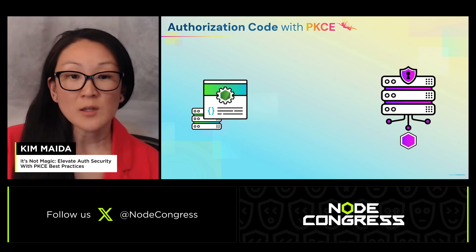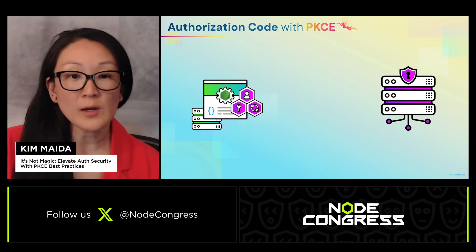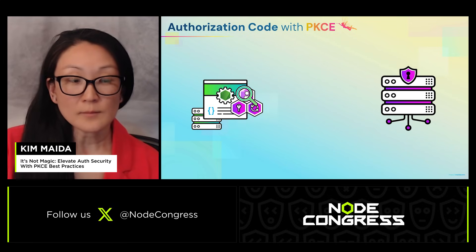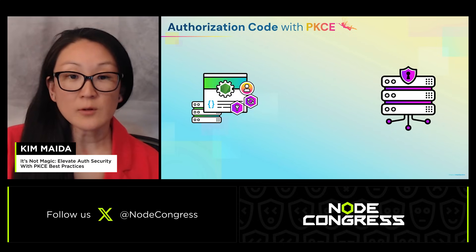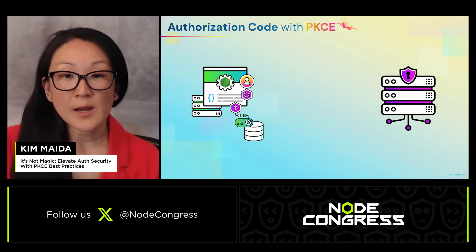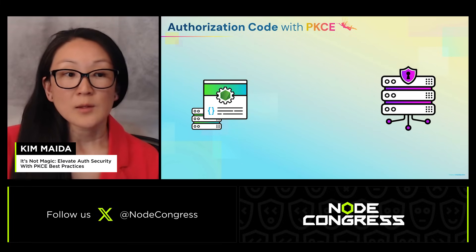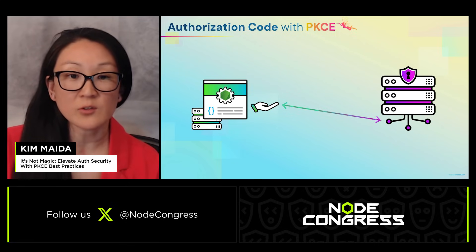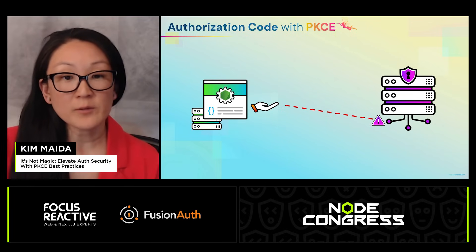If the challenges match, tokens are issued and delivered to the app where they are validated. The ID token can be used to identify the user, the access token can grant access to resources, and the refresh token can renew the user's session when it expires. Because PKCE explicitly connects client requests with responses from the authorization server, malicious requests that come from elsewhere become invalidated. This prevents cross-site request forgery, or CSRF, attacks.